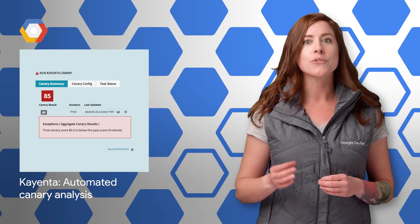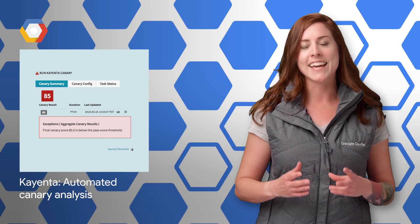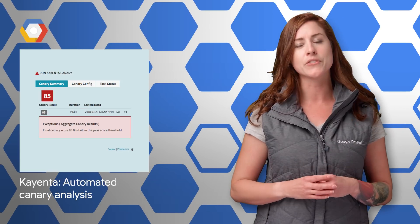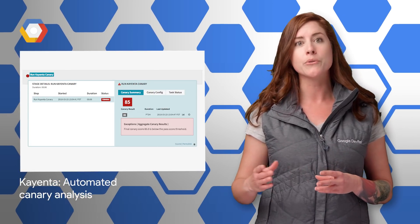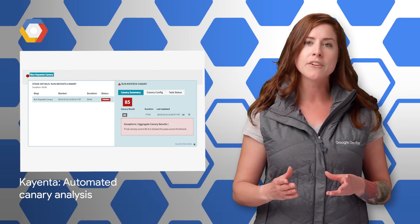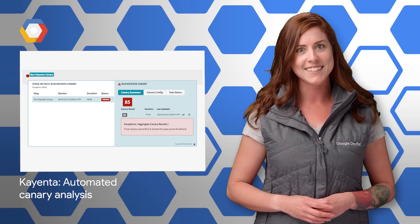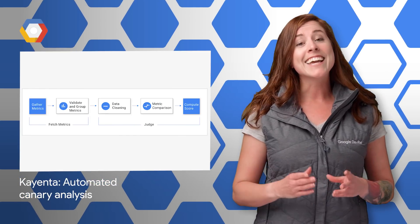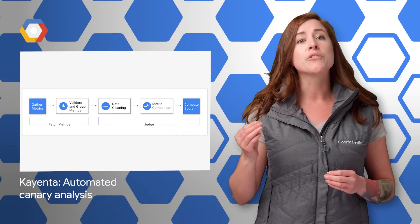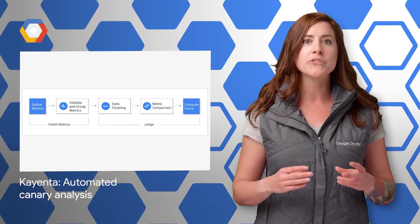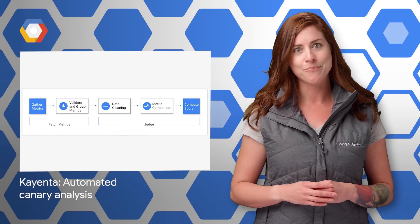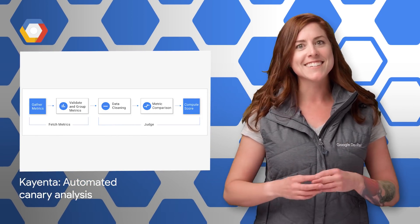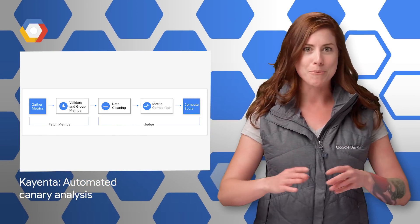Google and Netflix recently announced Kayenta, an open source automated canary analysis service that allows teams to reduce risk associated with rolling out deployments to production at high velocity. Kayenta is integrated with Spinnaker, an open source multi-cloud continuous delivery platform. All the details and links to get started are on the post.